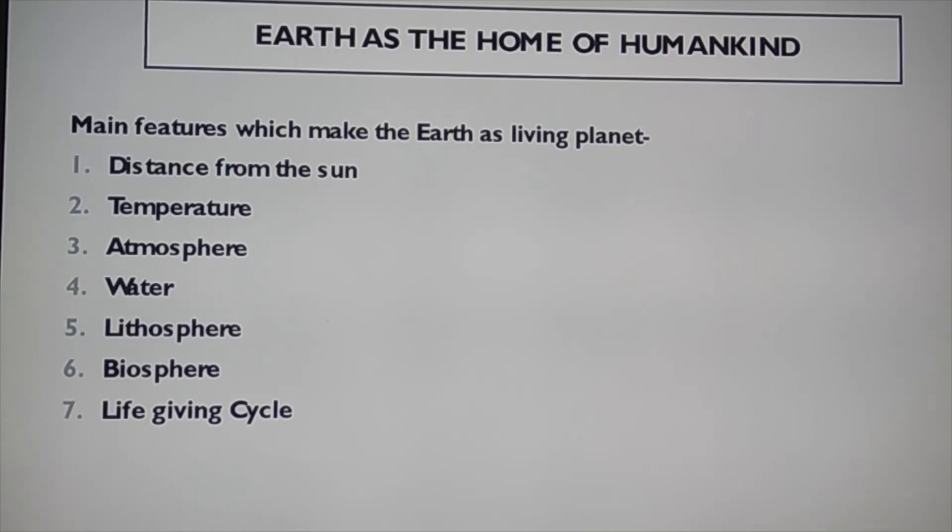The next heading of this chapter is Earth as the Home of Humankind. As we have already discussed, Earth is the only planet where life is there. So here we are going to discuss the main features which make the Earth a living planet, and there are seven reasons: first is distance from the sun, second is temperature, third is atmosphere, fourth is water, fifth is lithosphere, sixth is biosphere, and seventh is life-giving cycles. I hope you must have gone through these all headings in your previous classes. We will just revise once again.